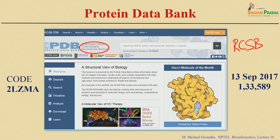Currently the PDB has about 133,589 structures, and this number is increasing periodically. The front page of the protein data bank shows the statistics, and you can use various search options to get the desired information. There are options to deposit, search, use advanced search, visualize, analyze, or download structures, and several tutorials related to the usage of protein 3D structures.